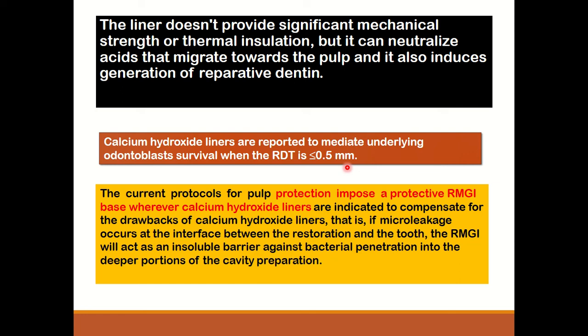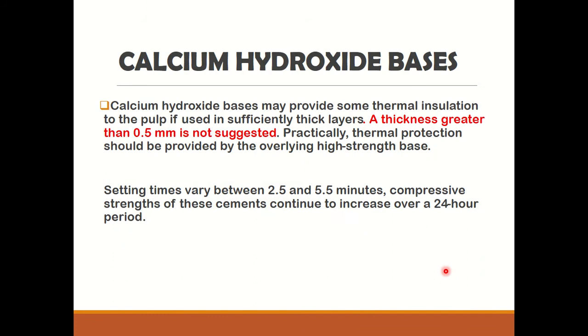The current protocol for pulp protection when using calcium hydroxide liner is to place a protective resin-modified glass ionomer base wherever the calcium hydroxide liner is used. Because the calcium hydroxide liner has certain disadvantages — it is highly soluble in water and dissolves over a period of time being highly water-soluble. So even if micro-leakage occurs at the interface between the restoration and the tooth, this resin-modified glass ionomer cement will act as an insoluble barrier against bacterial penetration into the deeper portion of the cavity.